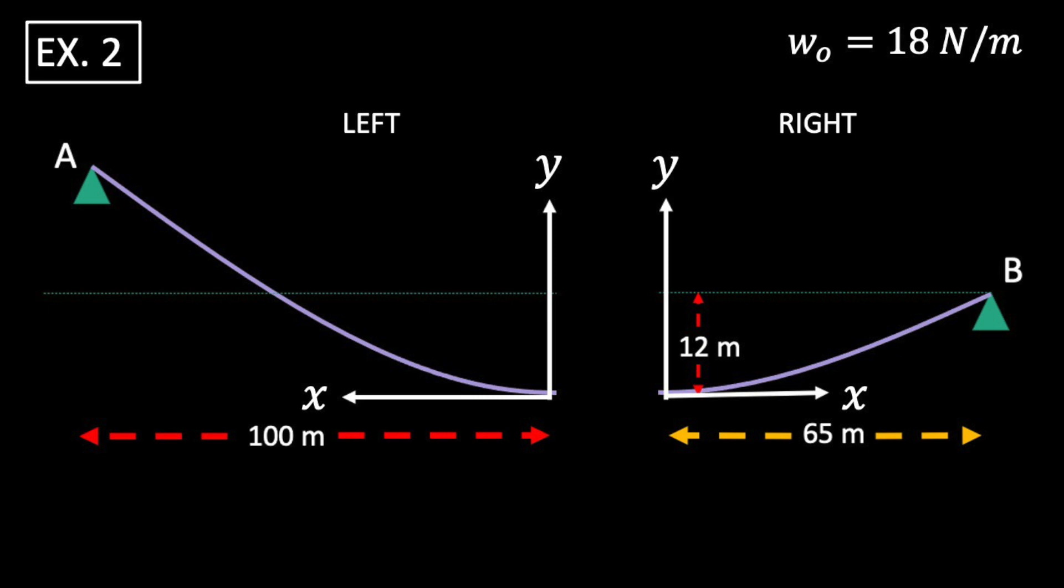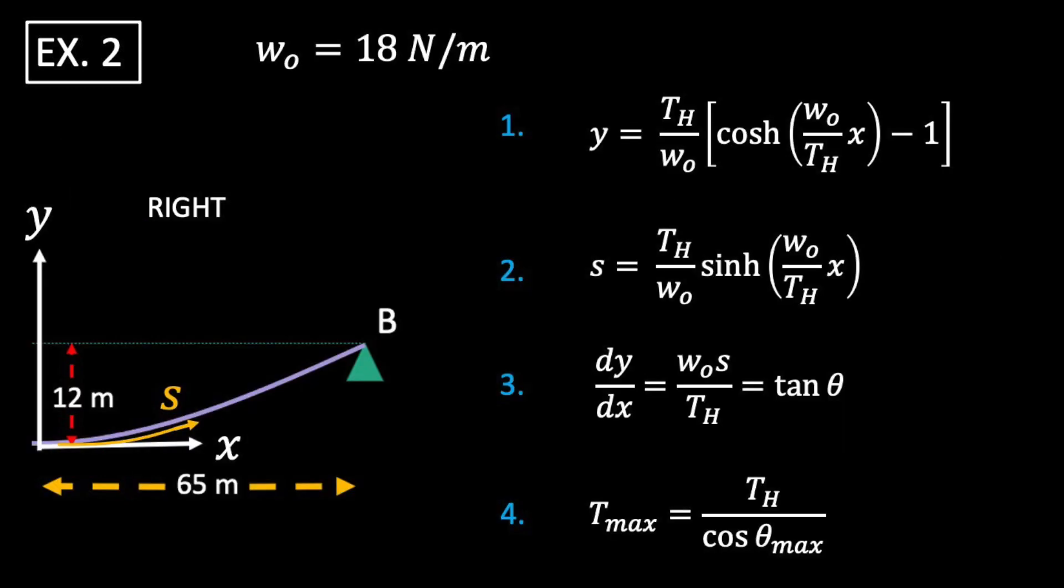Our first step is to come up with a plan. We split our system where the slope is zero, creating two different coordinate systems. These will let us use the relationships for cables under self weight that we already know. We start with the right hand side, since we know the seg value.